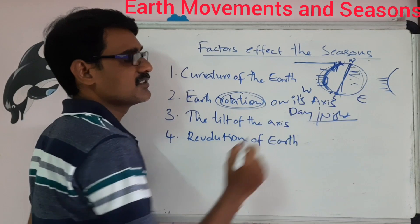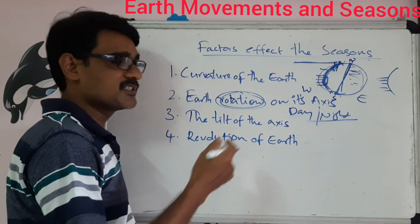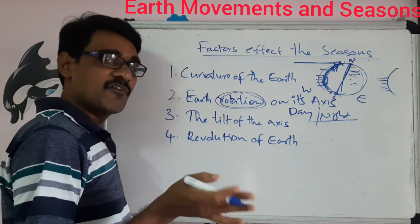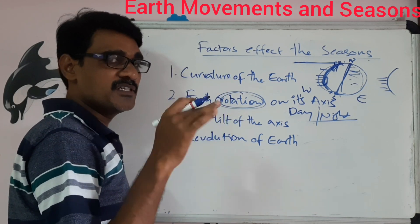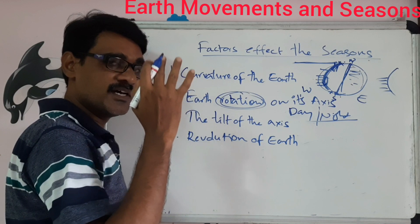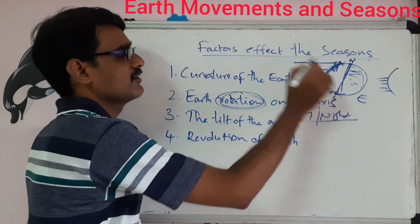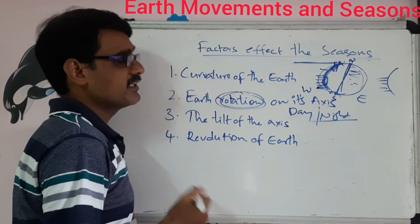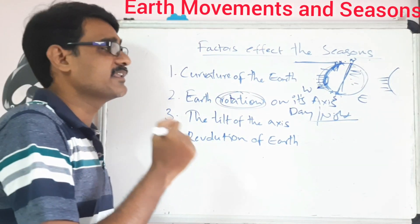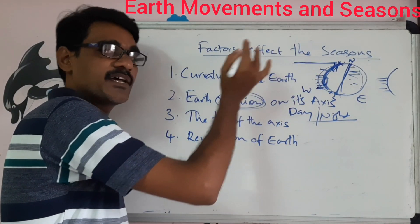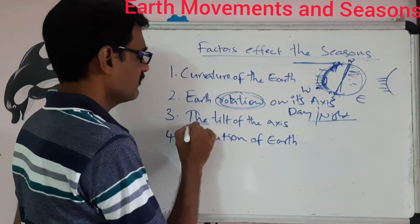Earth moves from west to east. If you place a globe in front of you, from your left to right the earth is moving — meaning the western places move to the eastern side. Finally, half of the earth receives sunlight and the remaining half is in darkness.